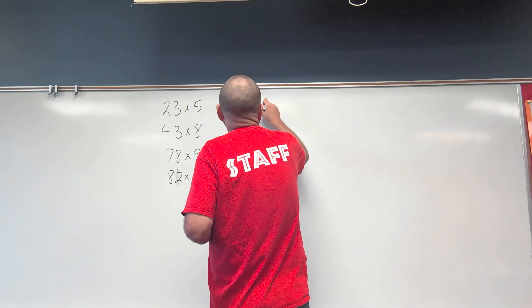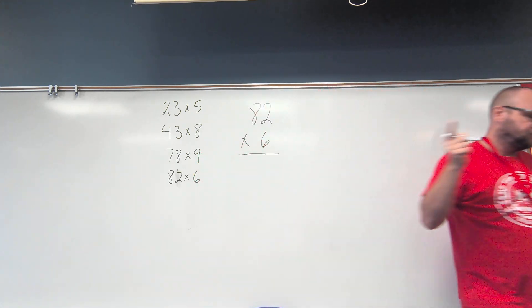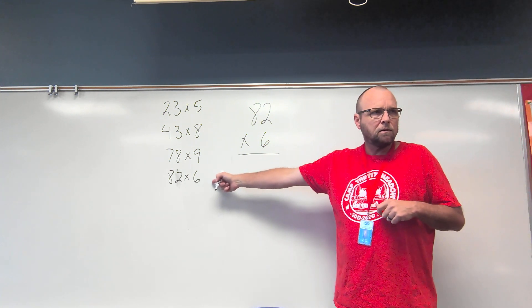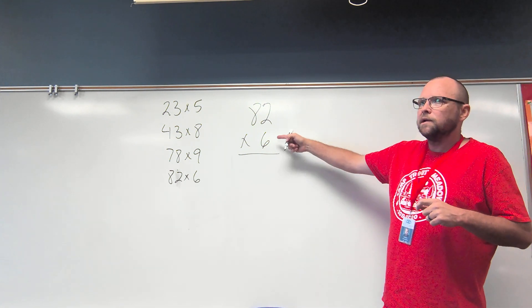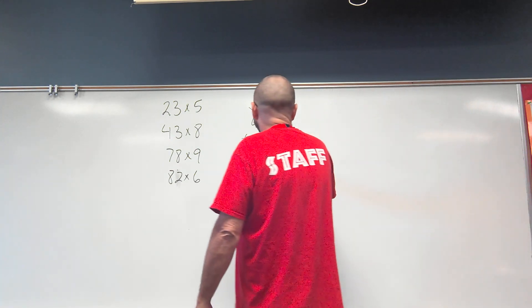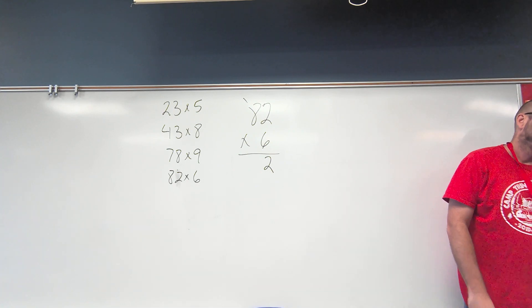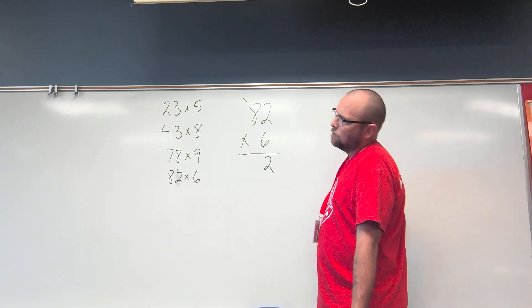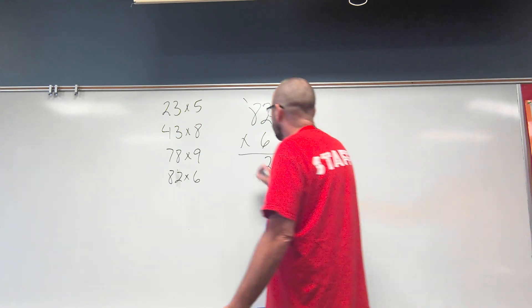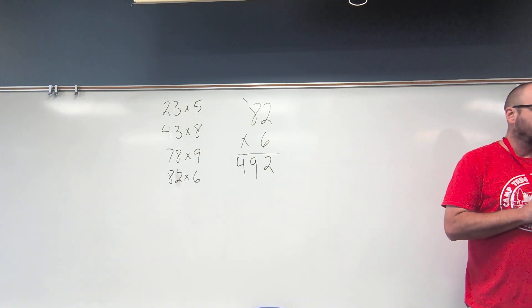82 times 6. What are these two numbers called? Factors. What's the answer to a multiplication problem called? Product. All right. 6 times 2 is? 12. Or two ones and one ten. 6 times 8 is? 48. Plus one more? 49. I don't want to carry around 49 ten dollar bills. So I'm going to change it in for four hundreds and nine tens. So we get 492.